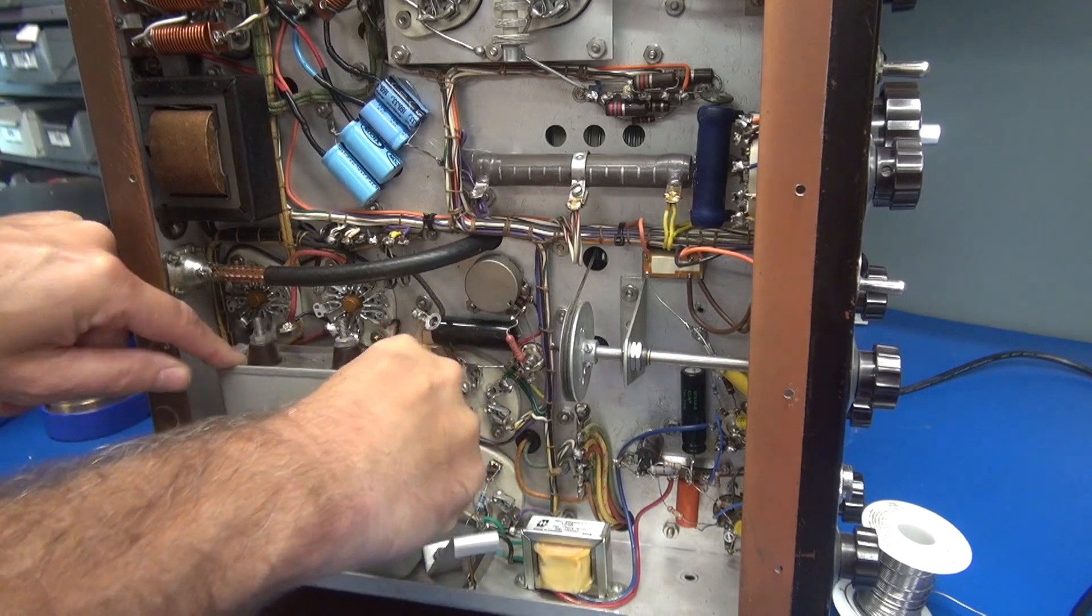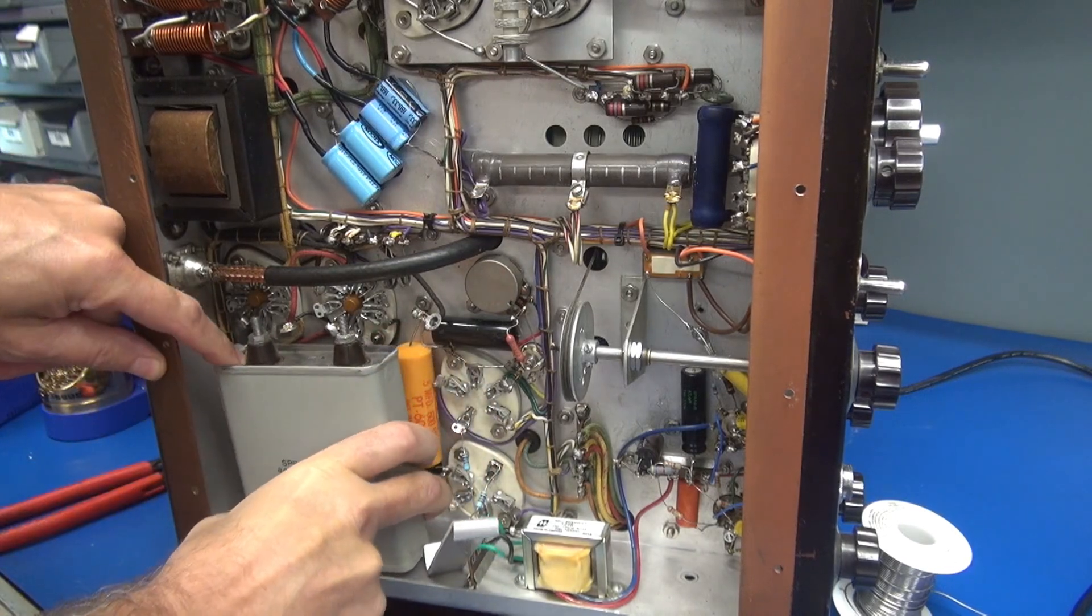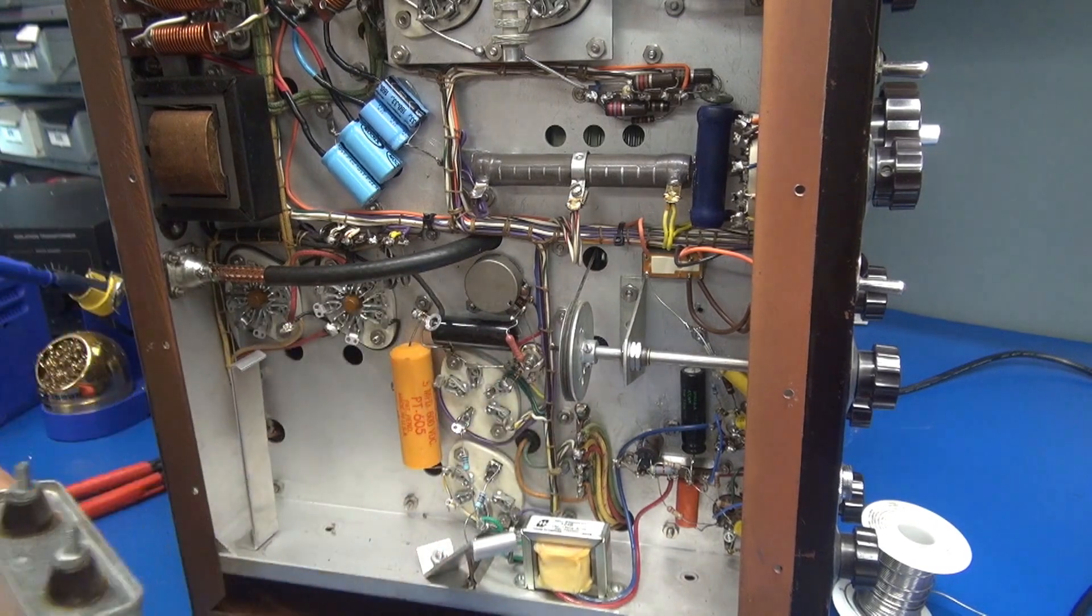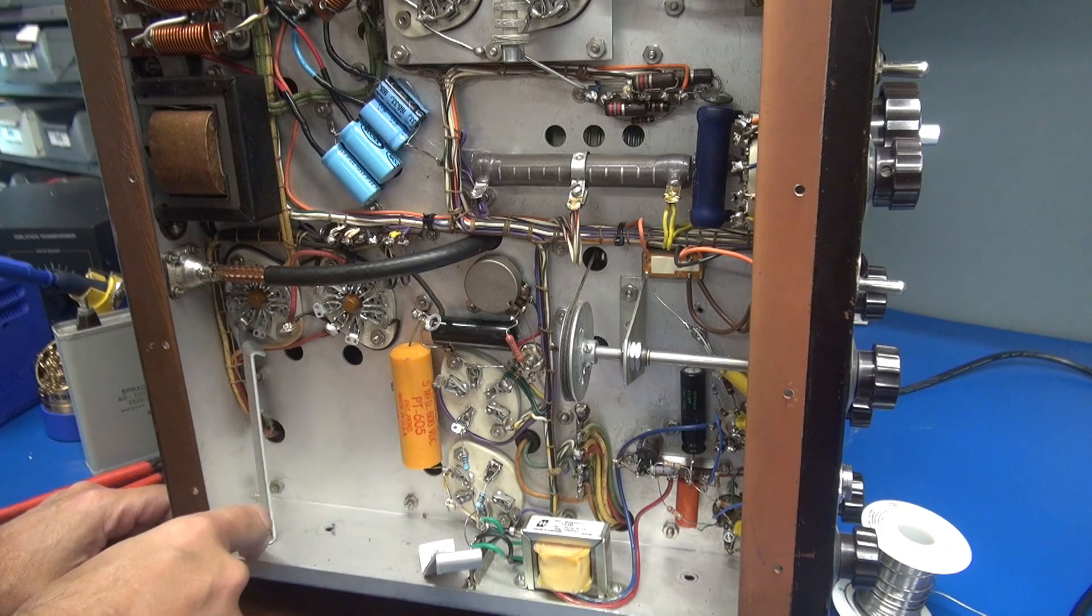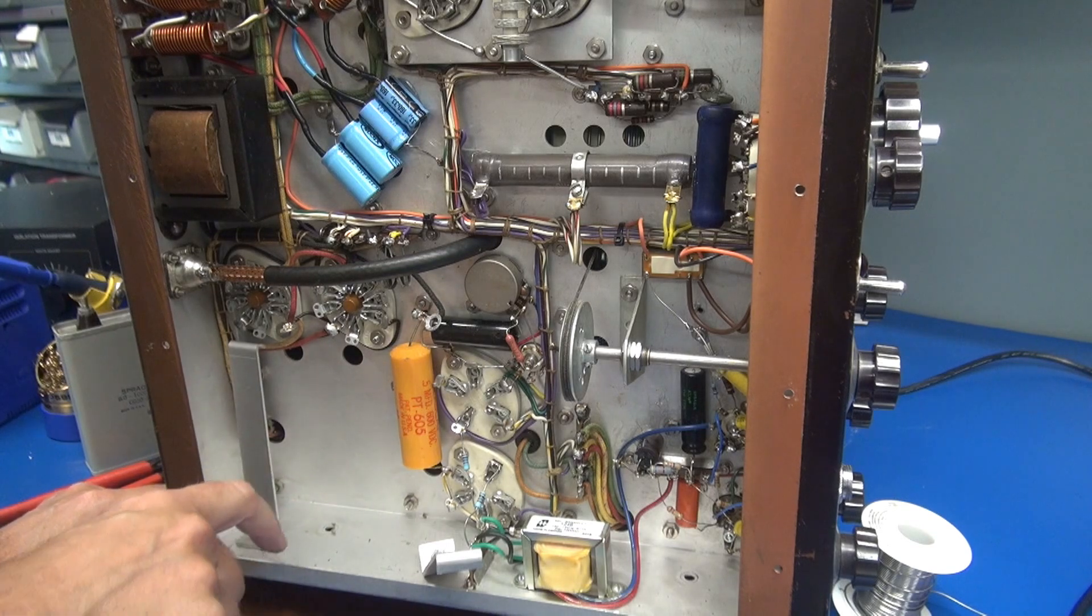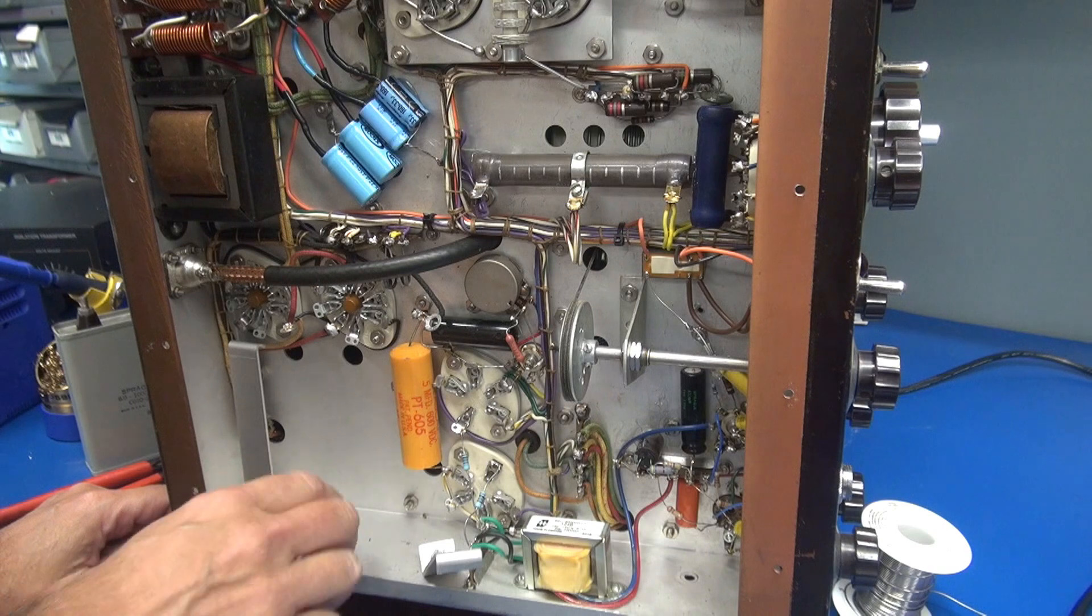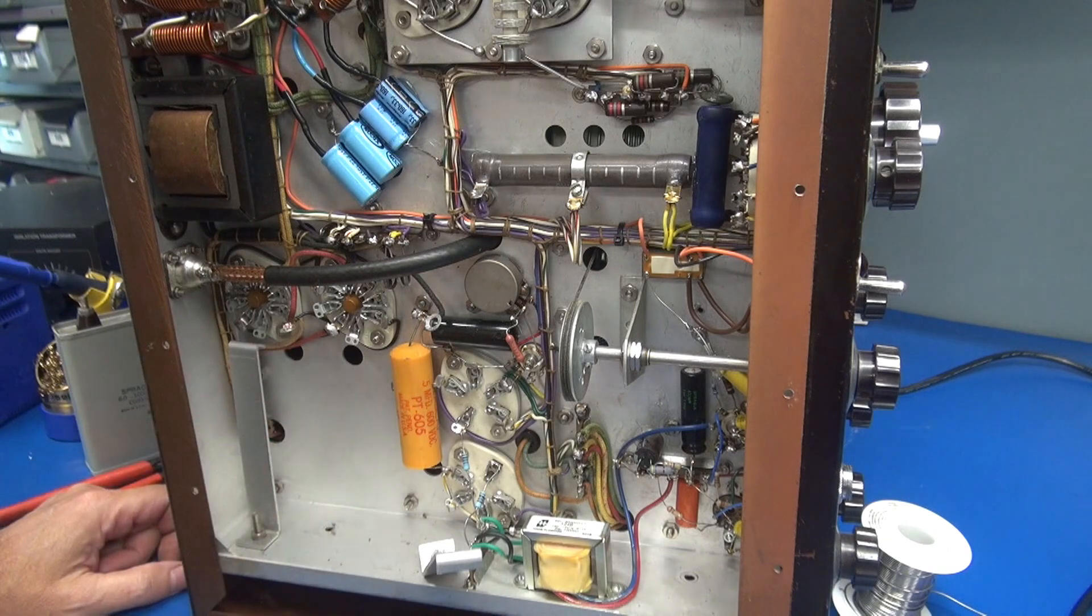So first off, you want to try to pop this guy. There we go. Out of the way. And then you can work on getting the old bracket out. I'm going to drill two holes here and we'll get the new one mounted up and swing the wiring into place.